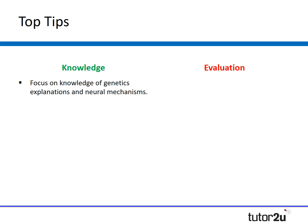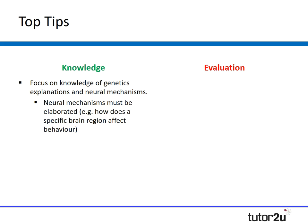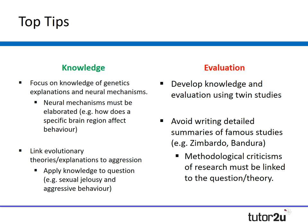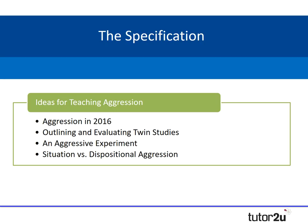Some top tips based on those examiner reports: students need to focus on knowledge and understanding of genetic and neural explanations. Neural mechanisms must be elaborated — how does a specific brain region affect behaviour? For evolutionary explanations, students need to apply their knowledge back to the question — if they mention sexual jealousy or aggressive behaviour, those need to be applied. In evaluation, students need to understand twin studies and how to use them, and avoid writing detailed summaries of famous studies like Zimbardo or Bandura unless it's clearly linked to the theory.